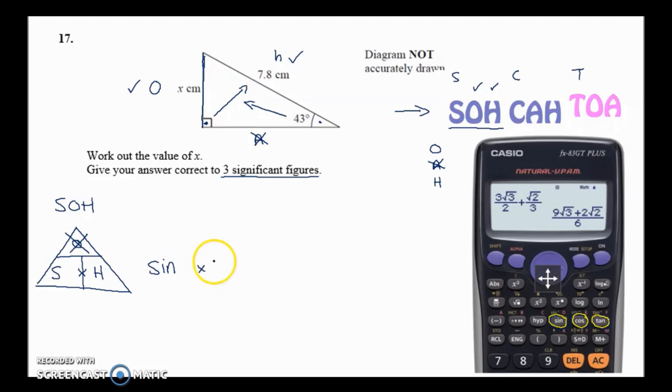Whenever you use sine, cos, or tan, you have to include the angle - that's why you use SOH CAH TOA with angles. The angle goes in here. For this question we need to do sine 43 times 7.8, which will tell us the length of O.